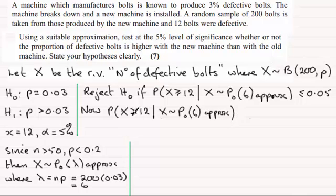Now to work this out, I'm going to need to use the cumulative Poisson probability distribution tables, and they give me the probability of being less than or equal to a given number. So I'm going to say that this is equal to 1 minus the probability of X being less than or equal to 11, given that X is distributed as a Poisson with a mean of 6, and that is approximately.